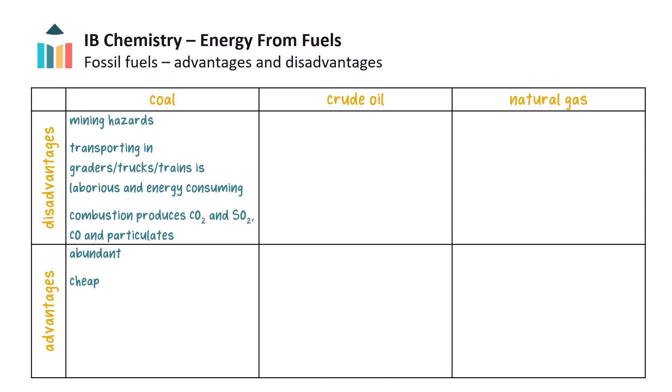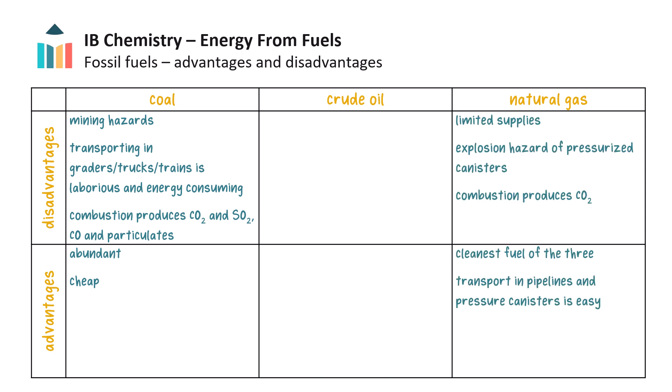Comparing the three fossil fuels, we can see that coal is abundant and cheap, but mining and transporting it is hazardous and energy intensive. Burning coal releases carbon dioxide and sulfur dioxide, which contribute to acid rain. Natural gas produces the fewest pollutants, although it does produce carbon dioxide, and transporting it is relatively easy. However, this more limited resource has an explosion hazard when handling pressurized gas canisters.